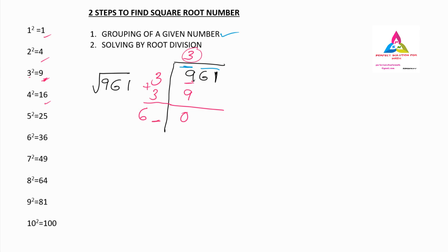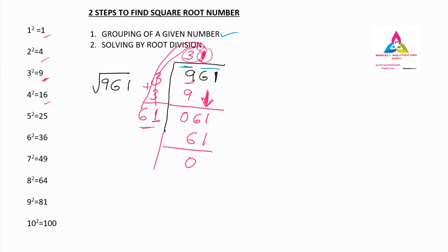Any number from 60 to 69 may come here. We bring down both digits: 61. Now to find the missing digit, don't look at the 1 — just see 6 divided by 6 is 1. So here we write 1, and here also 1. We multiply: 1 times 1 is 1, and 1 times 6 is 6. The remainder is 0, so the square root of 961 is 31.